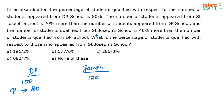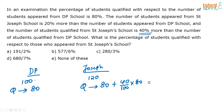The number of students who qualified from St. Joseph is 40% more than the number of students who qualified from DP school. So, how many students qualified from St. Joseph? It is nothing but 80 plus 40% of 80 — DP qualified plus 40%. That is equal to 112. So, 112 students have qualified from St. Joseph's.